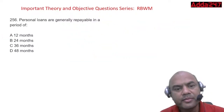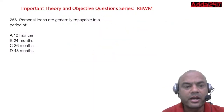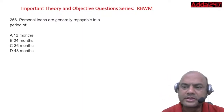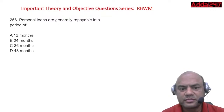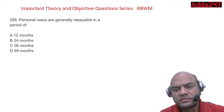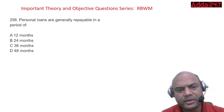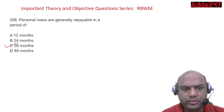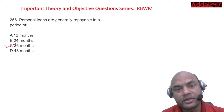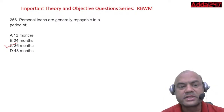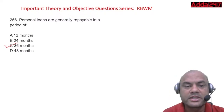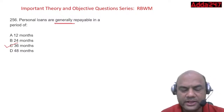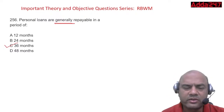Personal loans are generally repayable in a period of 36 months. Some banks do give a repayment period of 48 months, but generally 90 percent of the banks offer personal loans for 36 months.